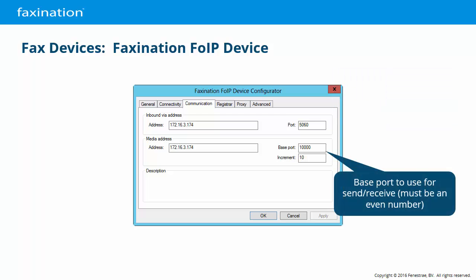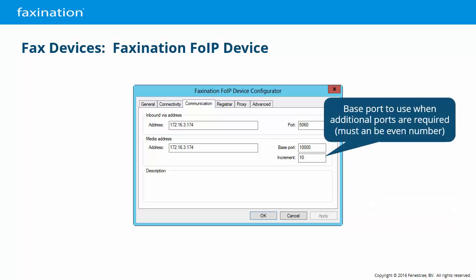5060 is just the SIP setup port. Once we switch to T.38 mode, the base port number will be used to send and receive the data — this must be an even number. When the base port is not available, for instance if it's busy with another incoming fax call, the port number is incremented by this amount until an available port is found. This must also be an even number.